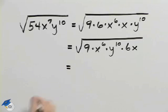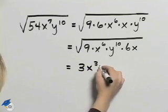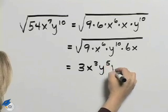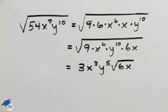The square root of 9 is 3. The square root of x to the 6th is x cubed. The square root of y to the 10th is y to the 5th. And then the square root of 6x, those two are not perfect squares so they remain underneath the radical. So this is our simplified form of this expression.